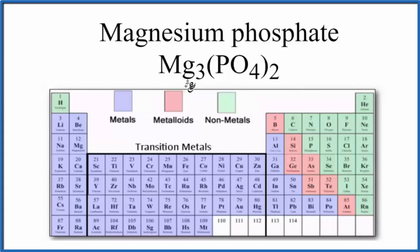So when we look at the periodic table, we have magnesium, that's a metal. And then phosphate and oxygen, those are nonmetals. When we have a metal plus nonmetals, that's an ionic compound. So Mg3(PO4)2, that's ionic.